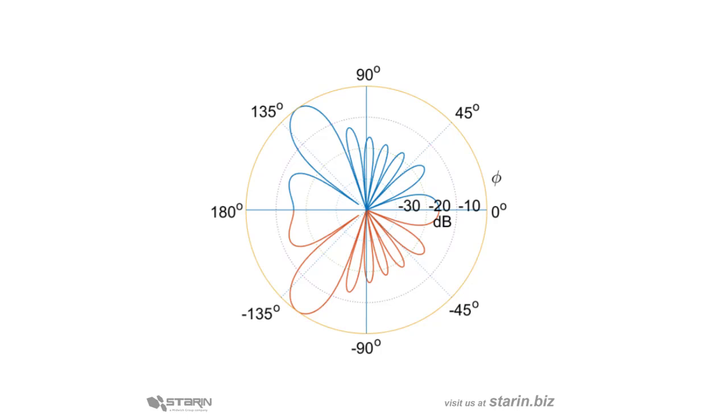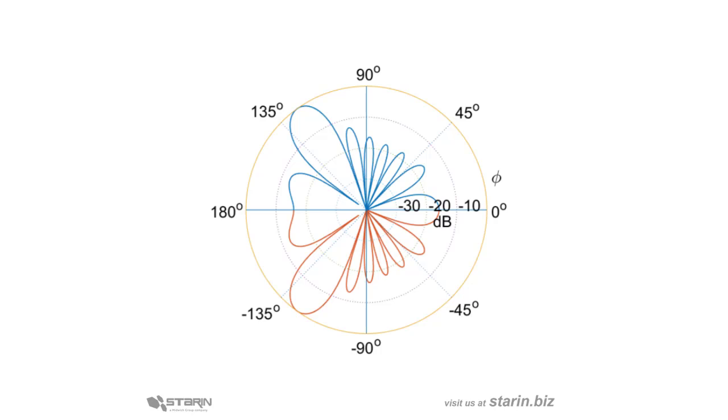These phase adjustments also can increase or decrease the width of an element's main lobe. Now incidentally, when you sequentially adjust phase proportionally across a series of elements, we find that we can tilt the pattern of the array in the direction of the leading phase.